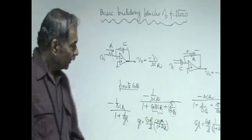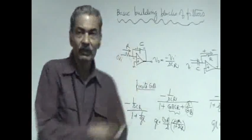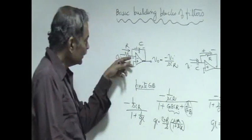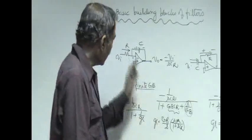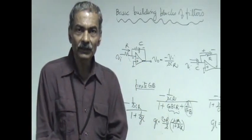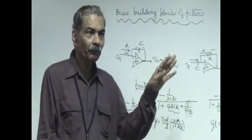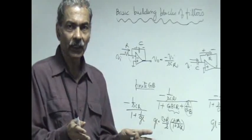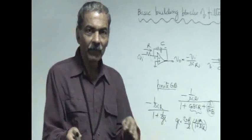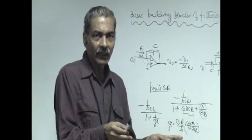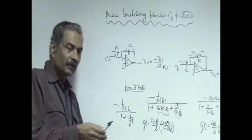There is one limitation, however. If the integrator is used standalone, it has a problem because there is no DC feedback. The input offset voltage, which is typically a few millivolts for op-amps, is going to be amplified by the DC gain — which is thousands or maybe hundreds of thousands — and therefore the op-amp output is invariably driven into saturation. In order to bring it out of saturation, you might have to put a high resistance in the feedback, but that will make it do non-ideal integration, and the phase error will again come into the picture.